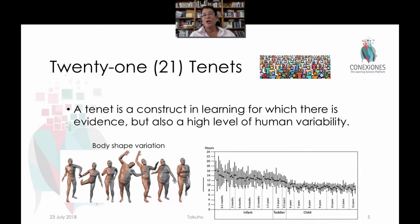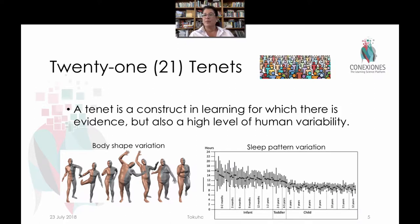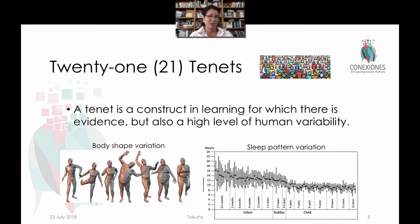For example, we know that most humans learn to talk and walk, but there is a range within which it's acceptable to learn to do these skills. We also know there are body types that are different, but there's a range. Similarly, for sleep patterns, we know that there's a range — anywhere between 4 and 12 hours is normal, eight is average, but we have to accept that there's going to be a huge range of human variability.